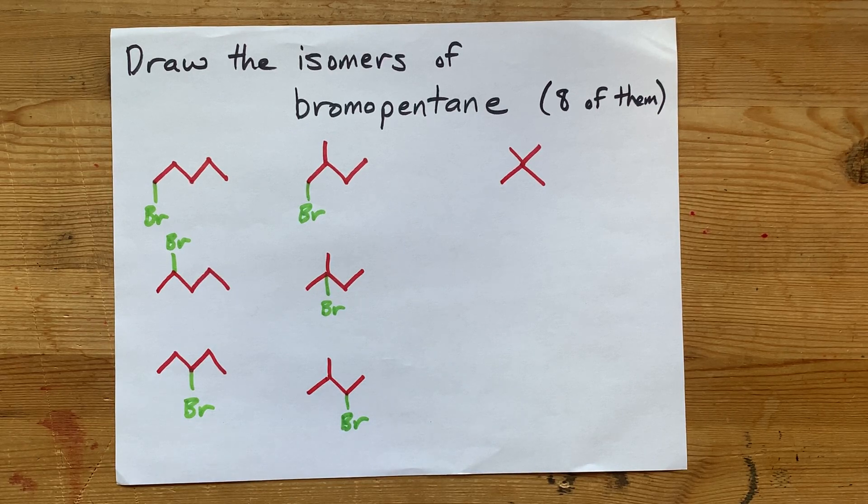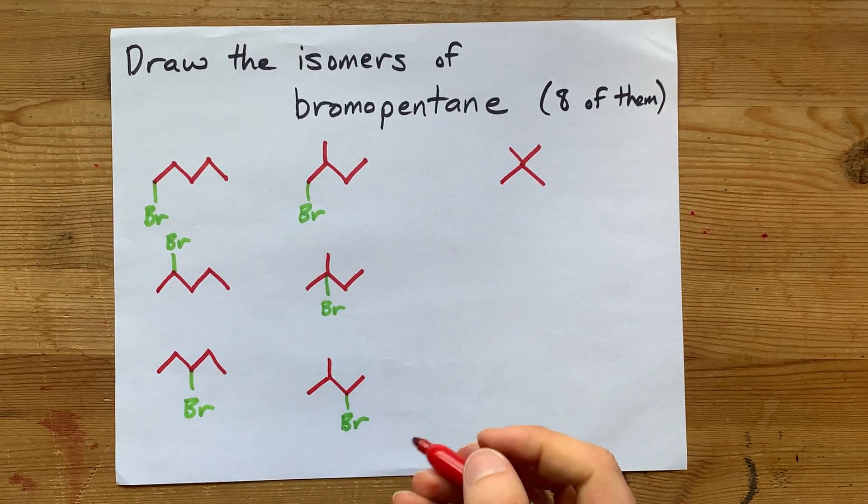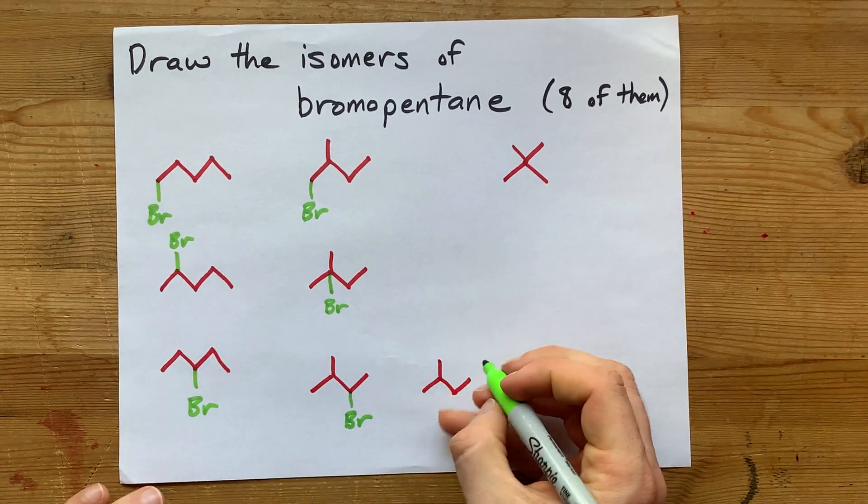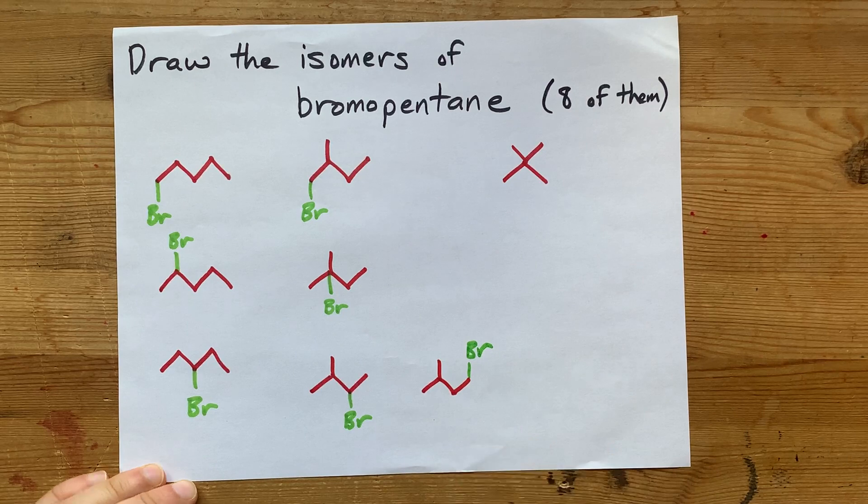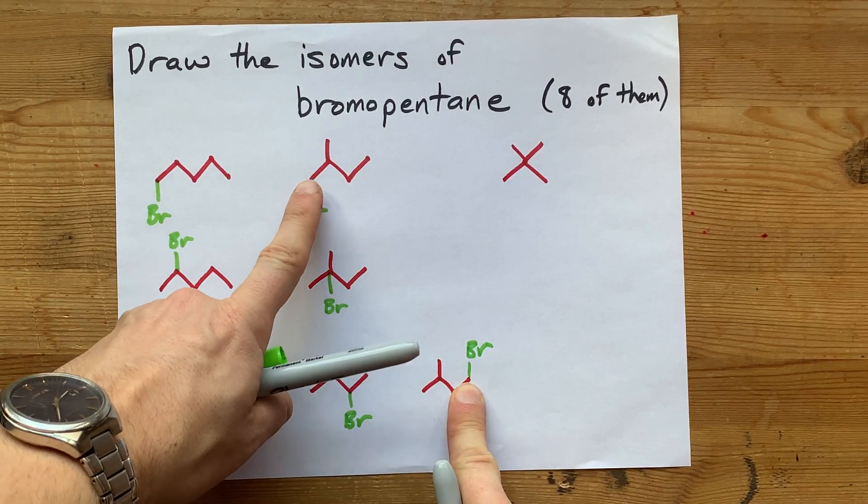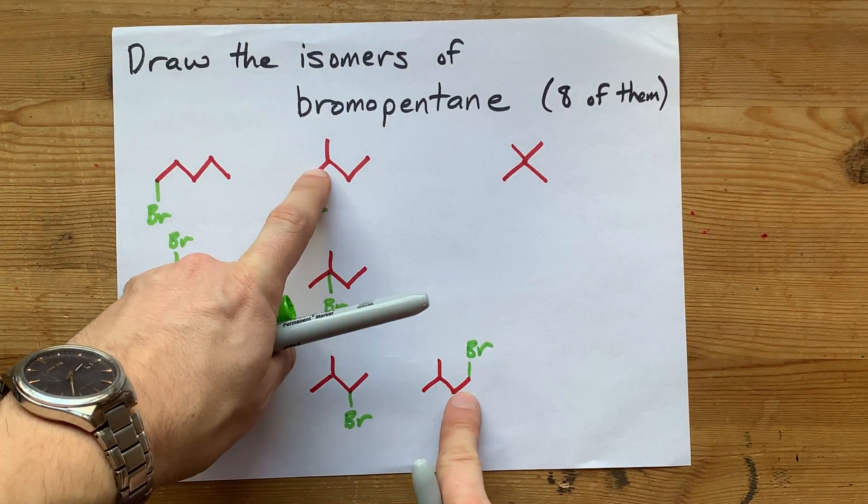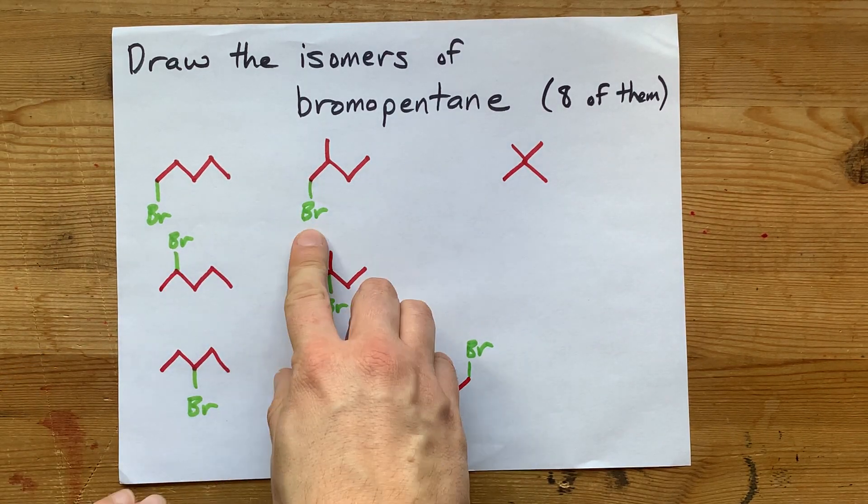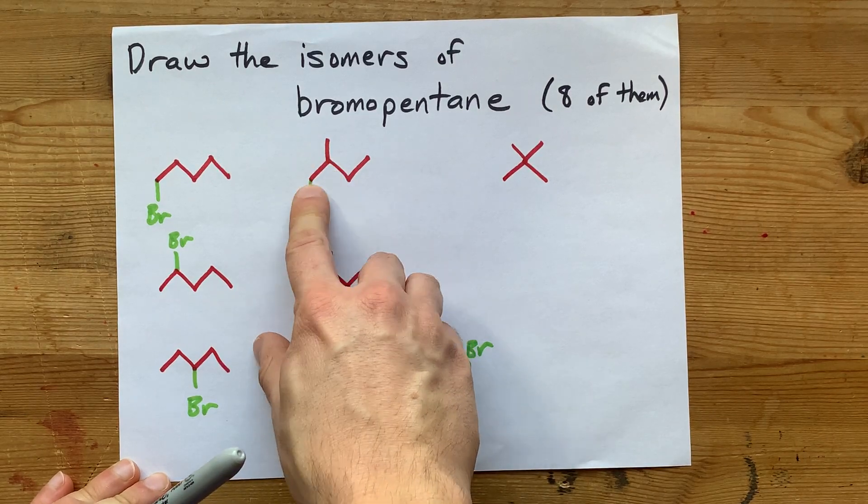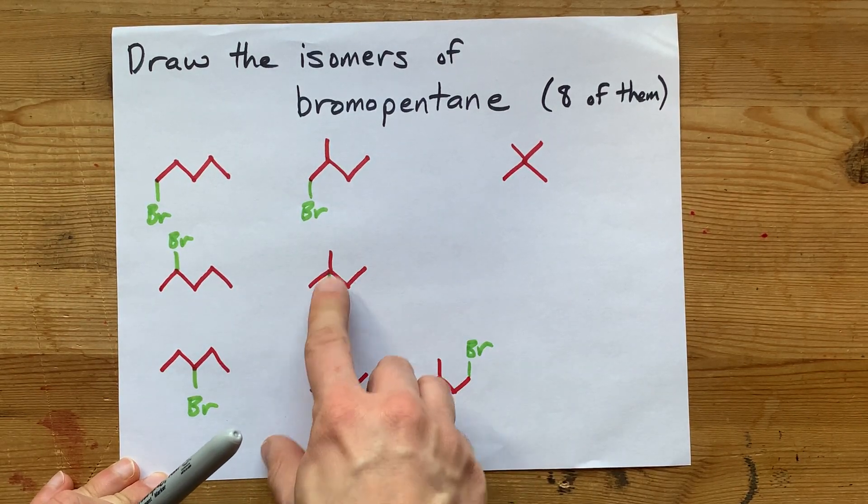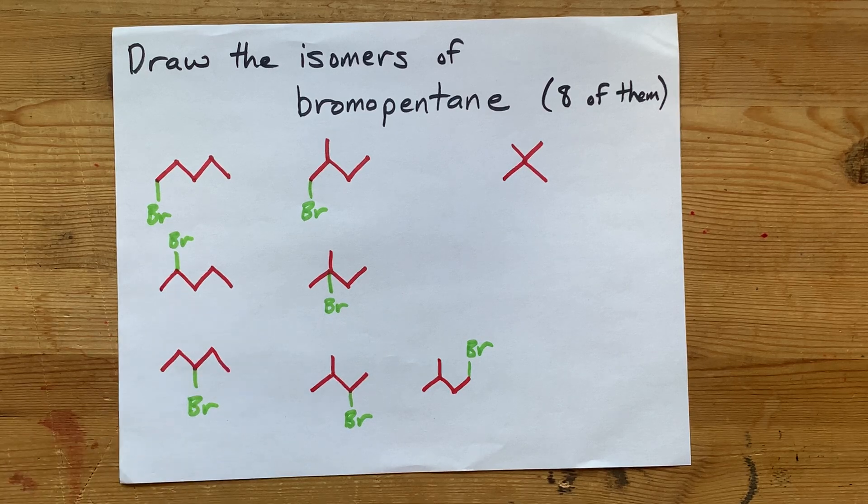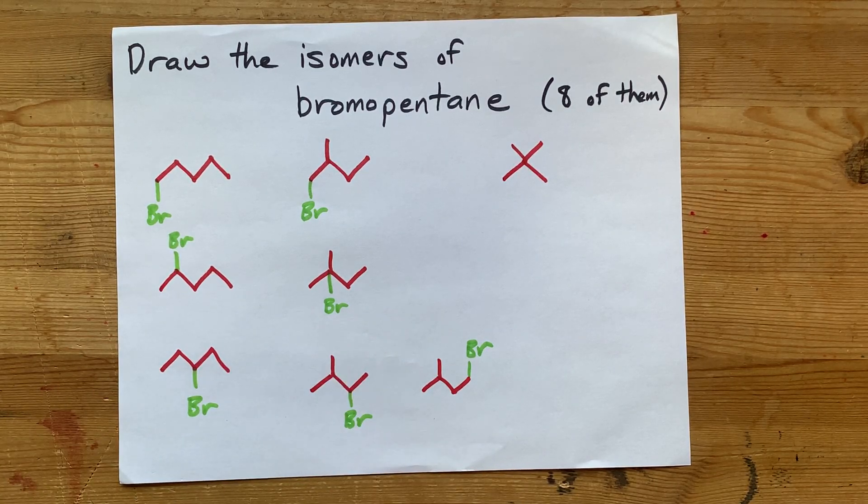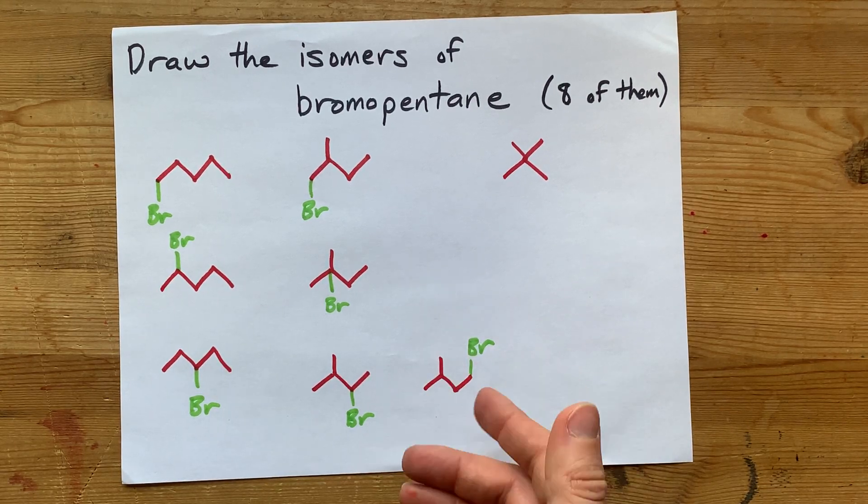Could I put bromine on the next carbon over? Well, actually, yes. And that gives you an even more different molecule. Connecting it to this carbon versus that carbon is different because of the relative placement of the extra methyl group. So here we have 1-bromo-2-methylbutane, 2-bromo-2-methylbutane, 2-bromo-3-methylbutane, and 1-bromo-3-methylbutane.